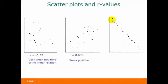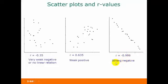And finally, we have this one. We do have something very close to a straight line, and it's going down from left to right, so this one is going to have a negative R value and it should be close to negative 1. This one turns out to be negative 0.996, so we would call this a strong — actually, a very strong — negative relation.